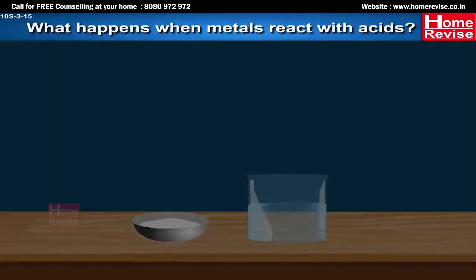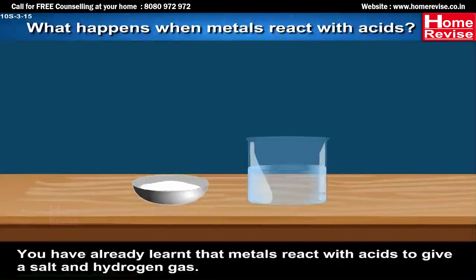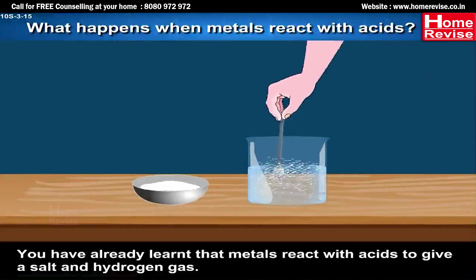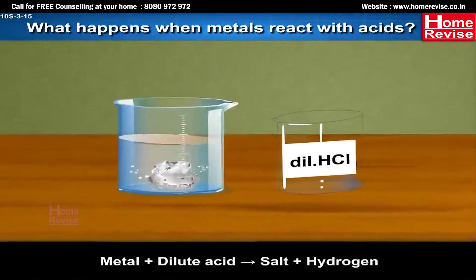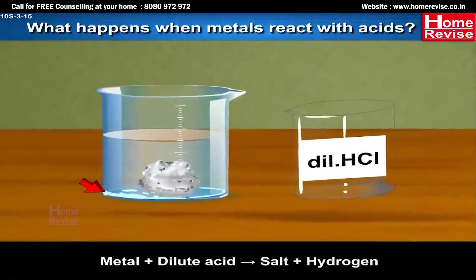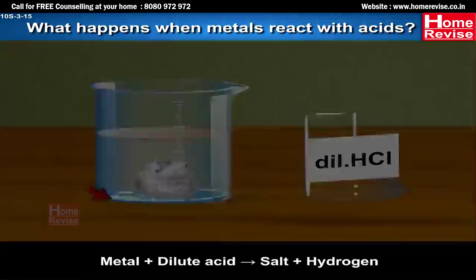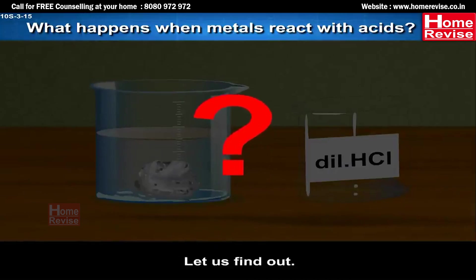What happens when metals react with acids? Metals react with acids to give salt and hydrogen gas. The general reaction is: Metal + Dilute Acid → Salt + Hydrogen. But do all metals react in the same manner? Let us find out.